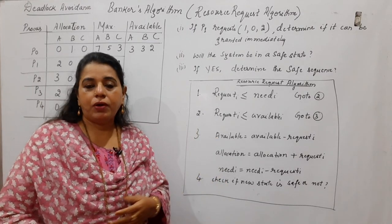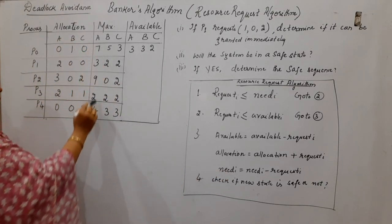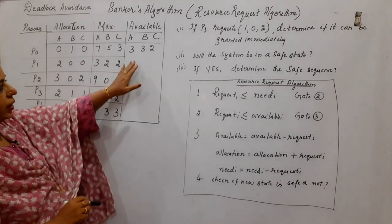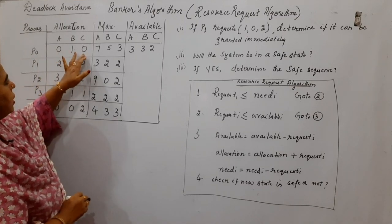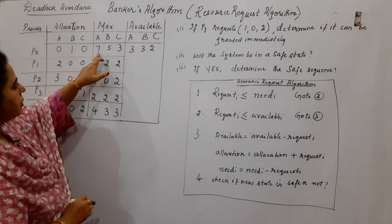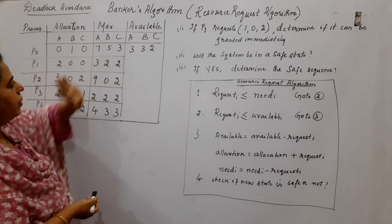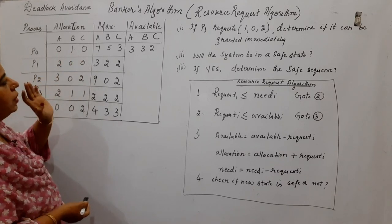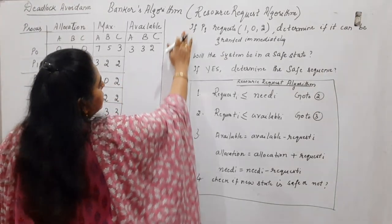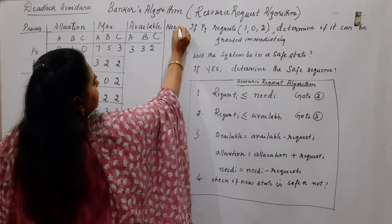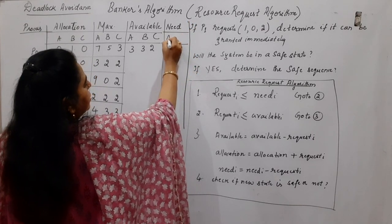The allocation matrix is given, the maximum matrix is given, and the available values are given. Process P0 is already holding 0,1,0 of A,B,C, and the maximum it has informed the system it may require is 7,5,3 of A,B,C. But it is holding only 0,1,0, so the remaining 7,5,3 minus 0,1,0 becomes the need. The first step is to find the need for each of the processes.